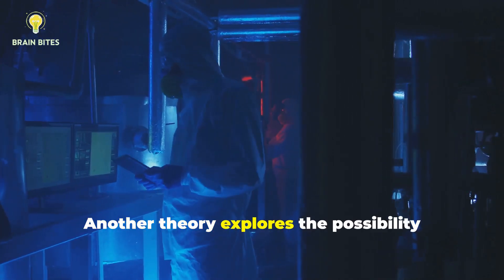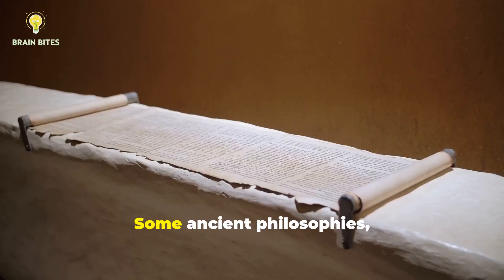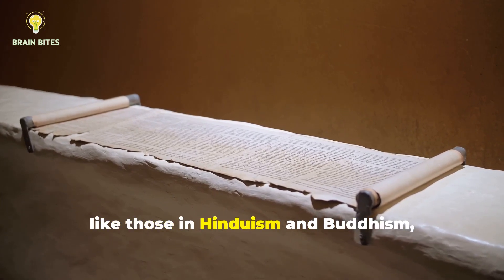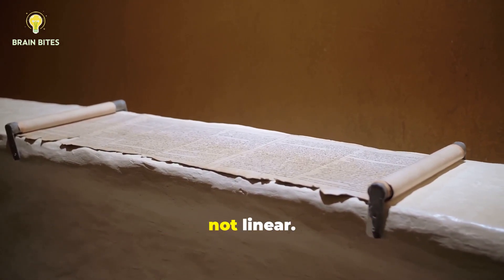Another theory explores the possibility of time loops. Imagine this. What if time isn't a straight line, but a circle, where events repeat endlessly? Some ancient philosophies, like those in Hinduism and Buddhism, suggest that time is cyclical, not linear.